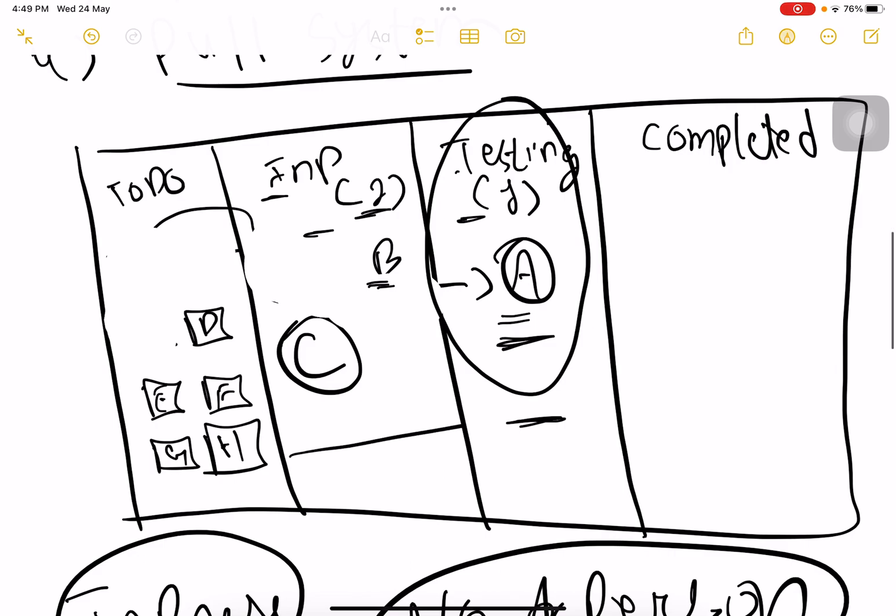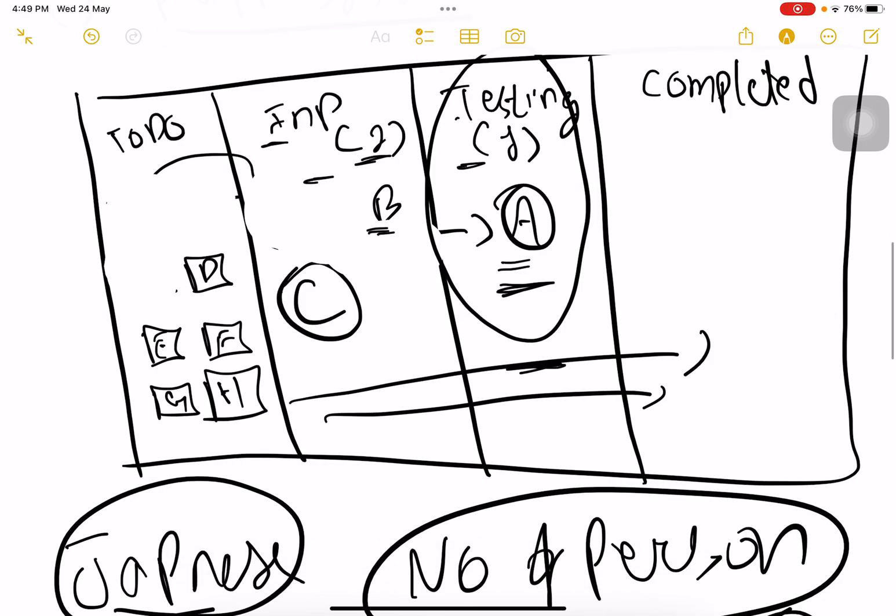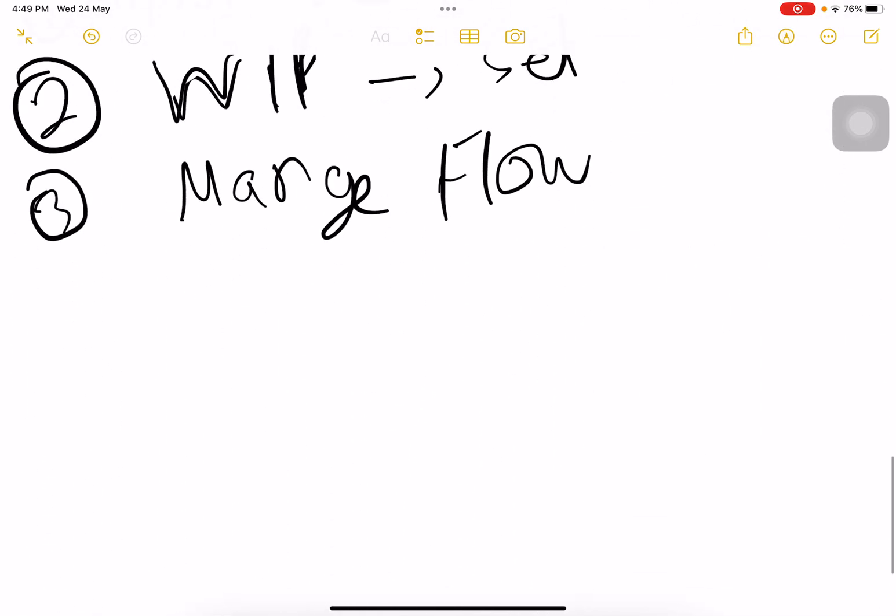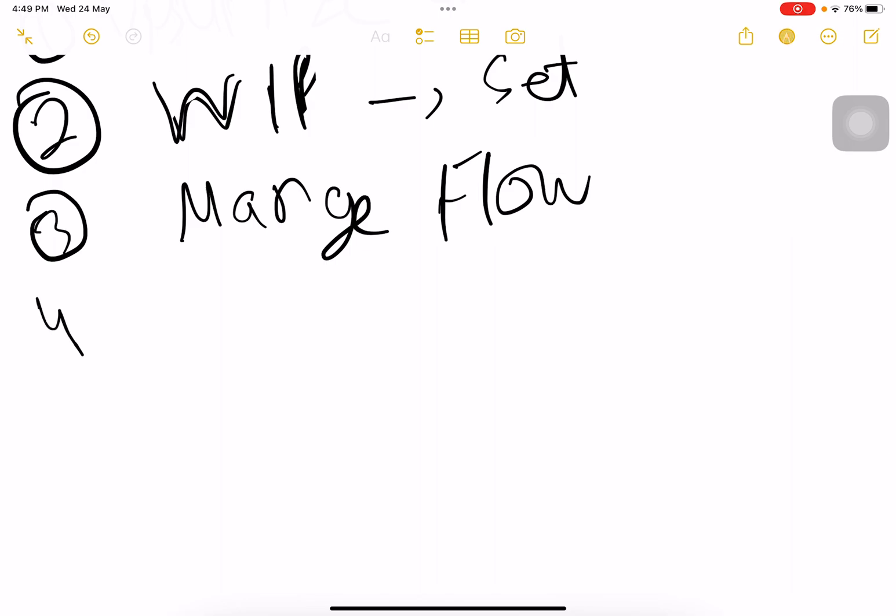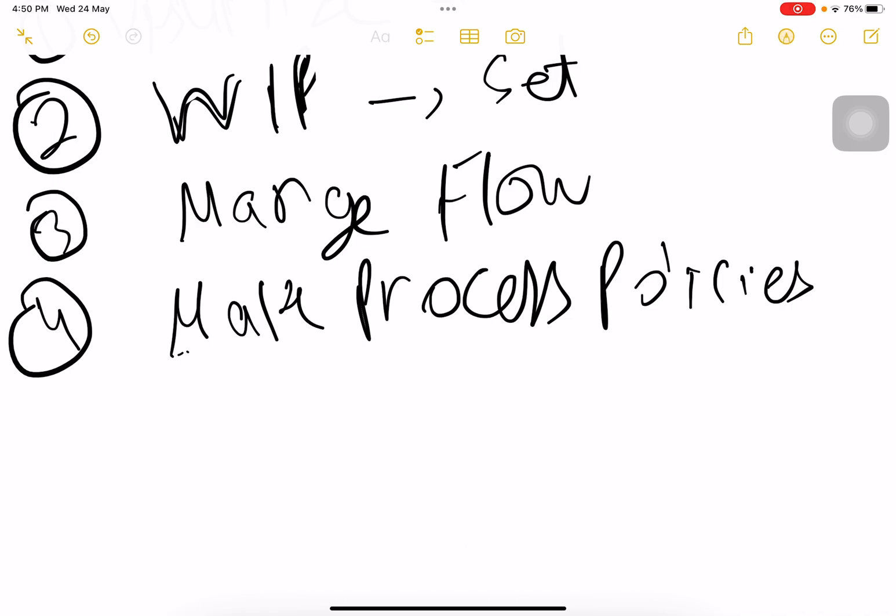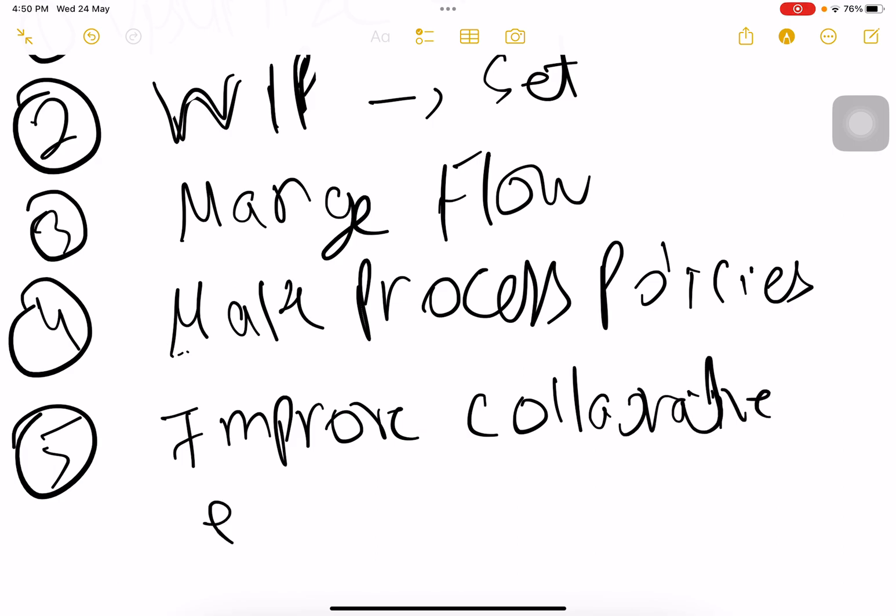Flow stage means once one is completed, you keep on moving and don't stop at all. Then you manage the flow and make the processes explicit - the work should be done in this way so the flow should not stop. Once the flow is established, you manage the policy so you don't have to change it every single time. And of course, one principle of Agile is we need to improve - improve collaboratively and evolve along the way.